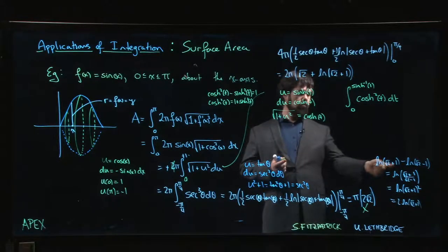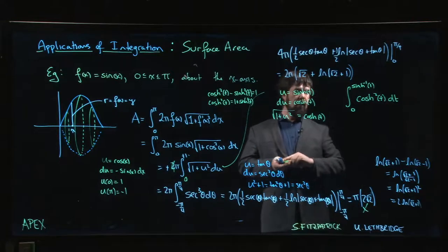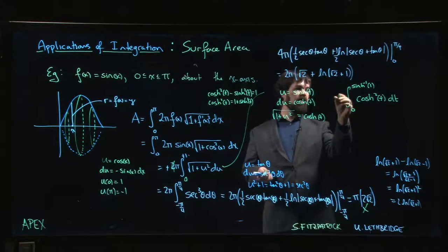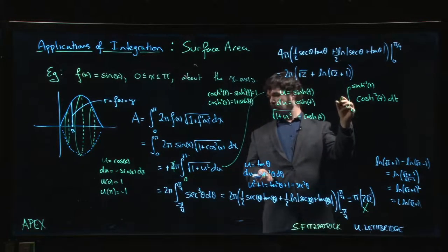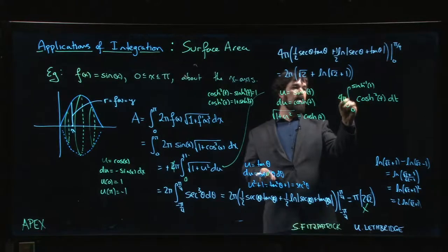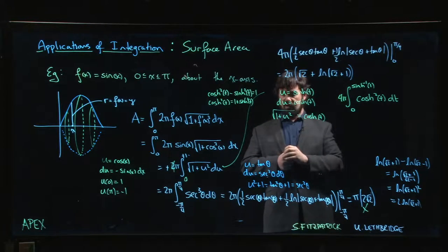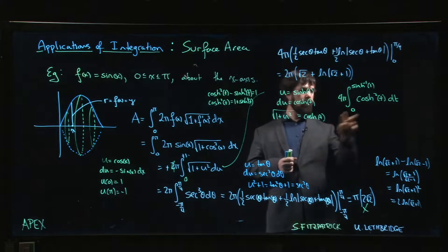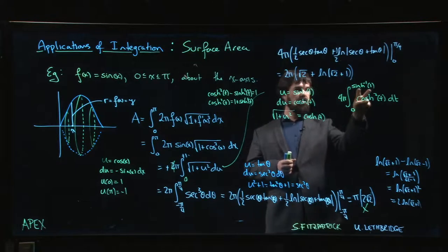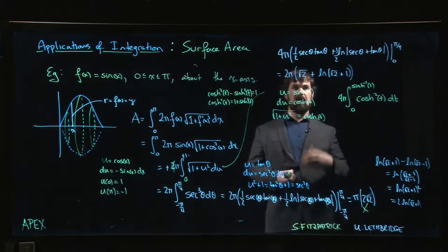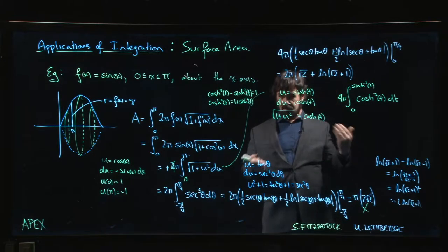It's worth going through checking - that four pi is still sitting out front. Go through, review that section on hyperbolic functions, check that identity, check that value, put everything in. You'll get the same answer whichever way you do it.